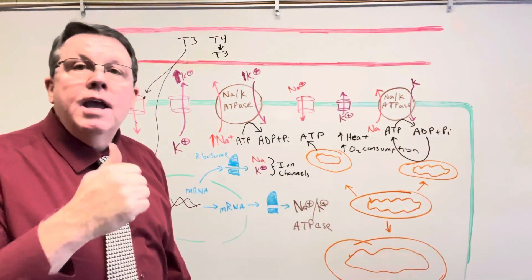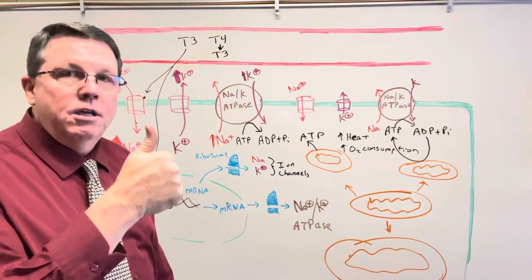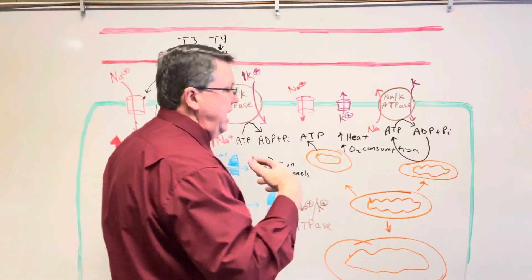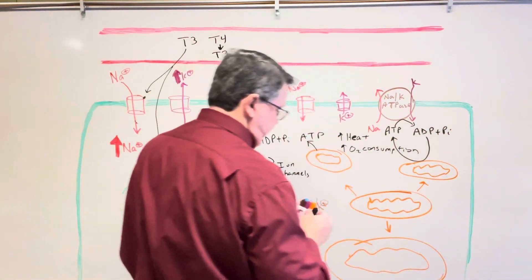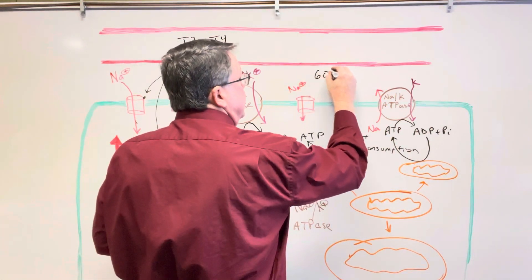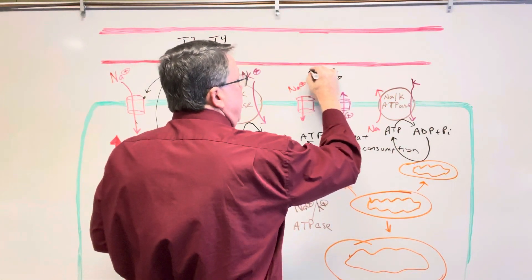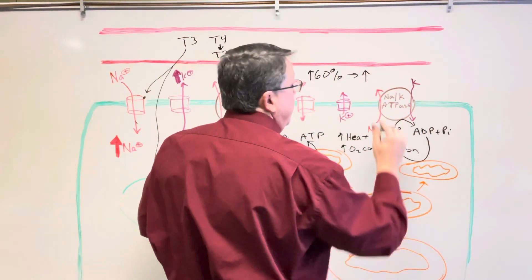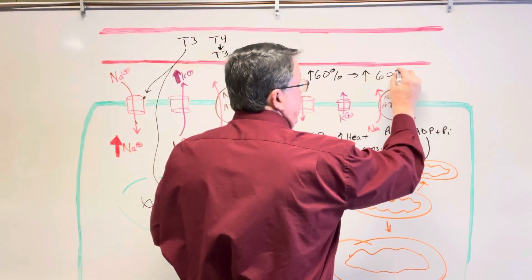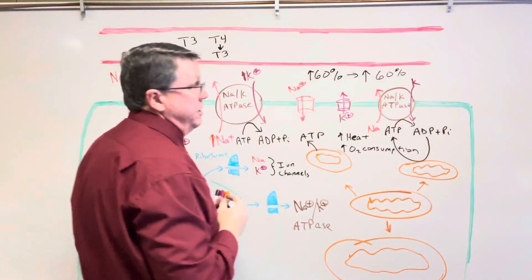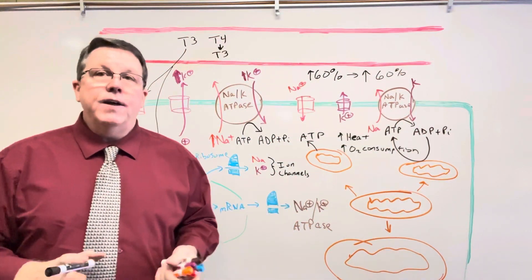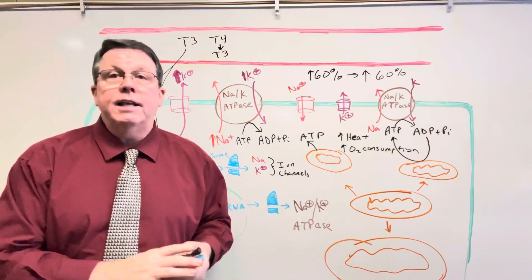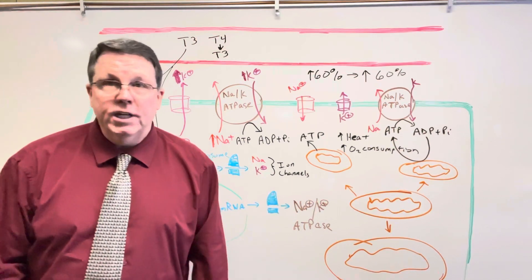However much I increase my metabolism, that's how much I increase my mitochondria surface area. So if I increase my metabolism by 60%, the body is going to increase the mitochondrial area by 60%. If metabolism went up by 70%, mitochondrial area goes up by 70%. That's it for how the thyroid hormone increases metabolism. I hope you enjoyed the video — please hit the like and subscribe button and we'll catch you next time.